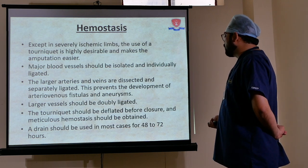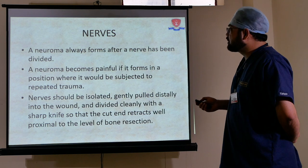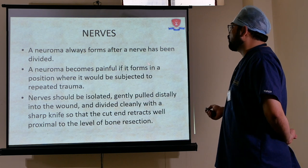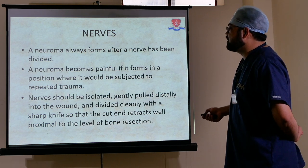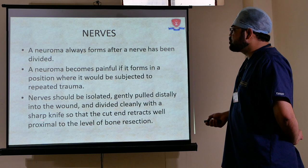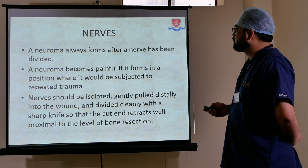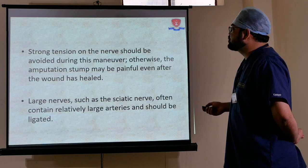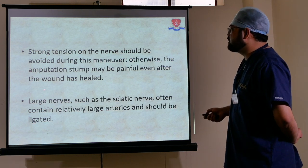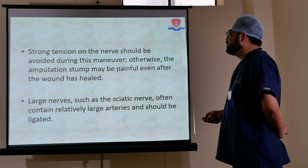Nerves: a neuroma always forms after a nerve has been divided. A neuroma becomes painful if it forms in a position where it is subjected to repeated trauma. The nerve should be isolated, gently pulled distally into the wound, and divided cleanly with a sharp knife so that the cut end retracts well proximally to the level of bone dissection. Strong tension on the nerve should be avoided; otherwise the amputation stump may remain painful. Large nerves such as the sciatic nerve often contain relatively large arteries and should be ligated separately.